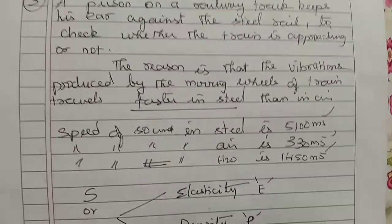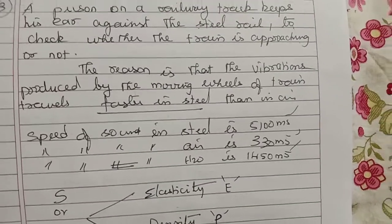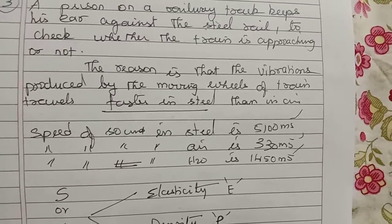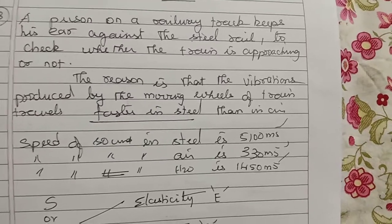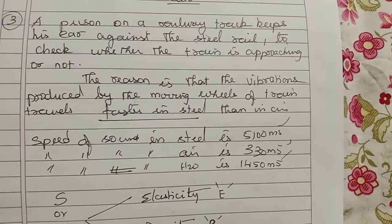we will understand clearly that the speed of sound in steel is 5100 meters per second, speed of sound in air is 330 meters per second, and speed of sound in water is 1450 meters per second.